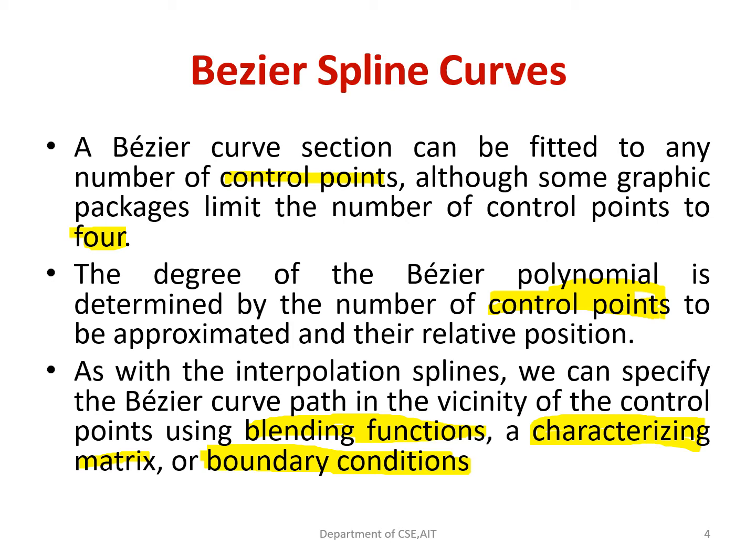The degree of the Bezier polynomial is determined by the number of control points approximated and their relative positions. As with the interpolation splines, we can specify the Bezier curve path in the vicinity of the control points by making use of blending functions, a characterizing matrix, or a boundary condition. For general Bezier curves with no restrictions on the number of control points, the blending function specification is the most convenient representation. The control points determine in which direction the curve will be present, and the curve will be in the neighborhood of the control points only.